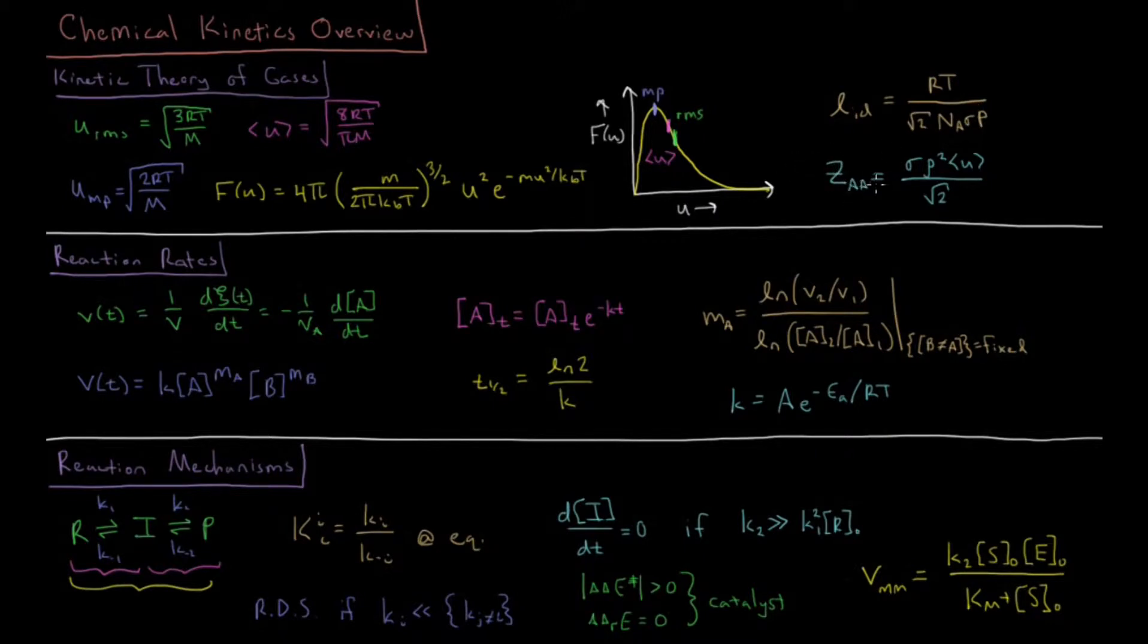And the total collision rate which tells us how many collisions occur per unit volume per unit time in a sample of gas which is the cross sectional area of the gas times its density squared times the average speed of a gas molecule divided by the square root of 2 which for a sample of N2 gas at 298 Kelvin gives us something like 10 to the 29th collisions per cubic centimeter per second, a lot of collisions.